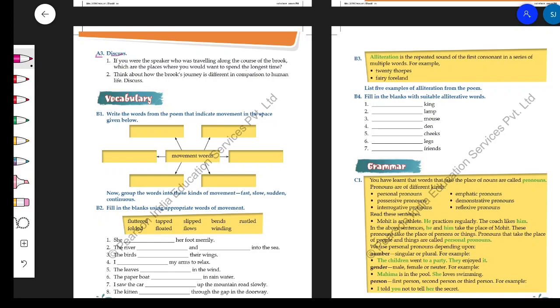Now let us move to the vocabulary section. In the vocabulary section, we have to find words from the poem that indicate movement.